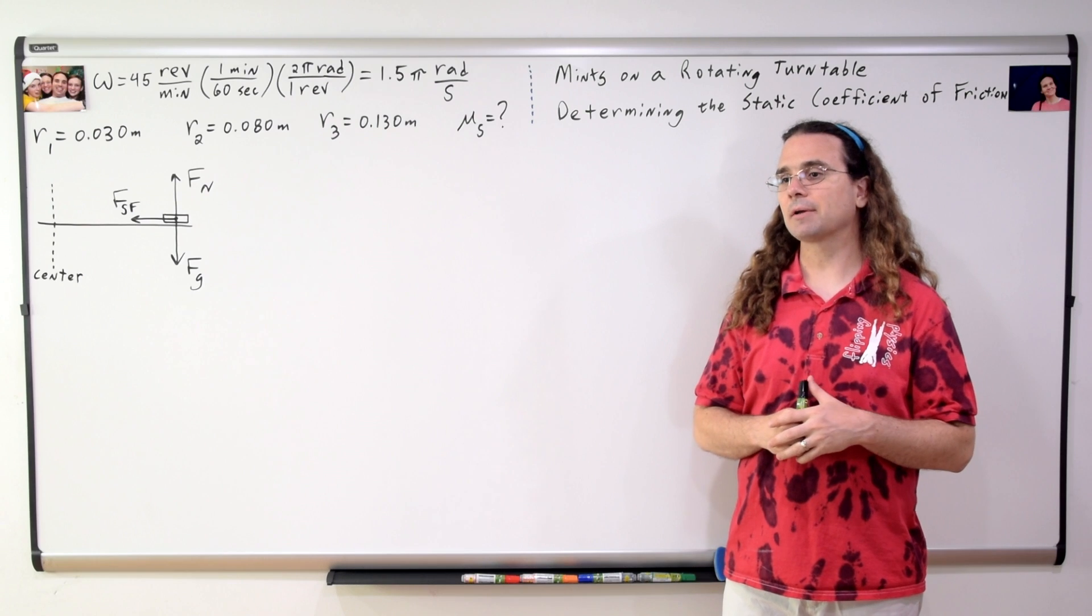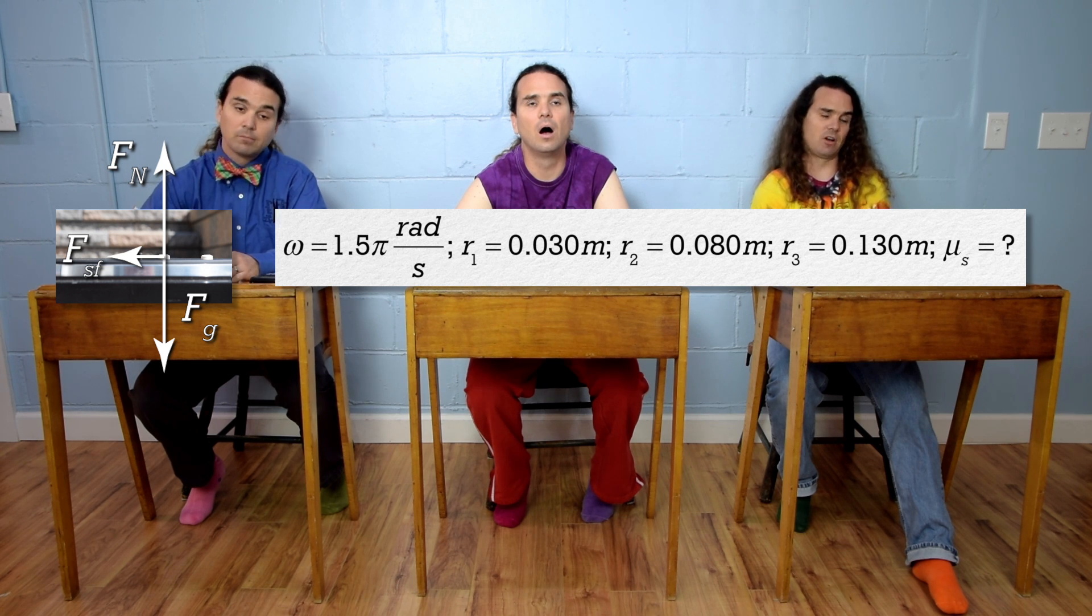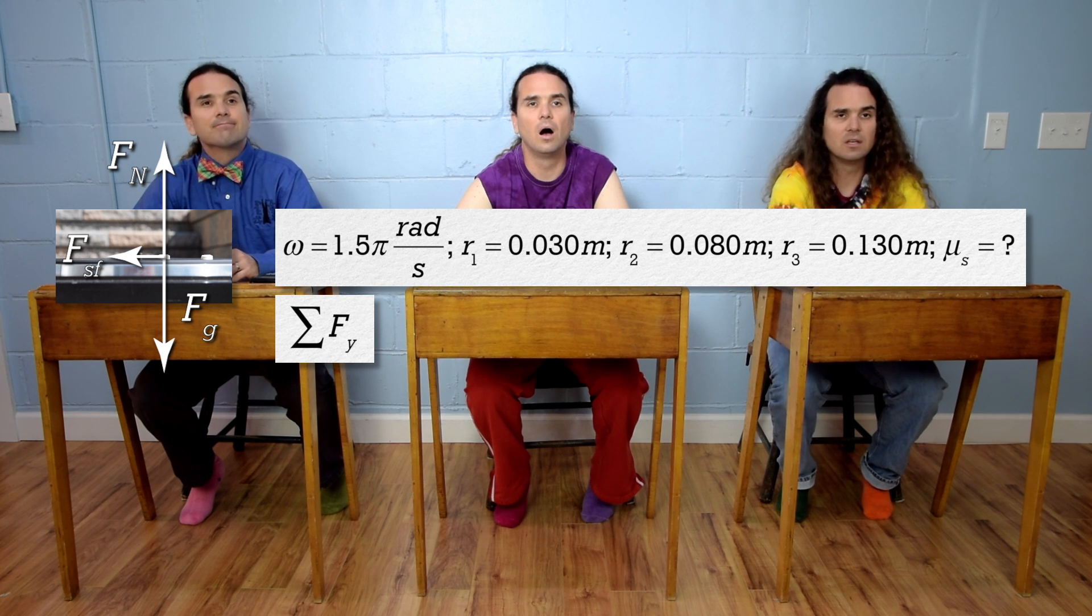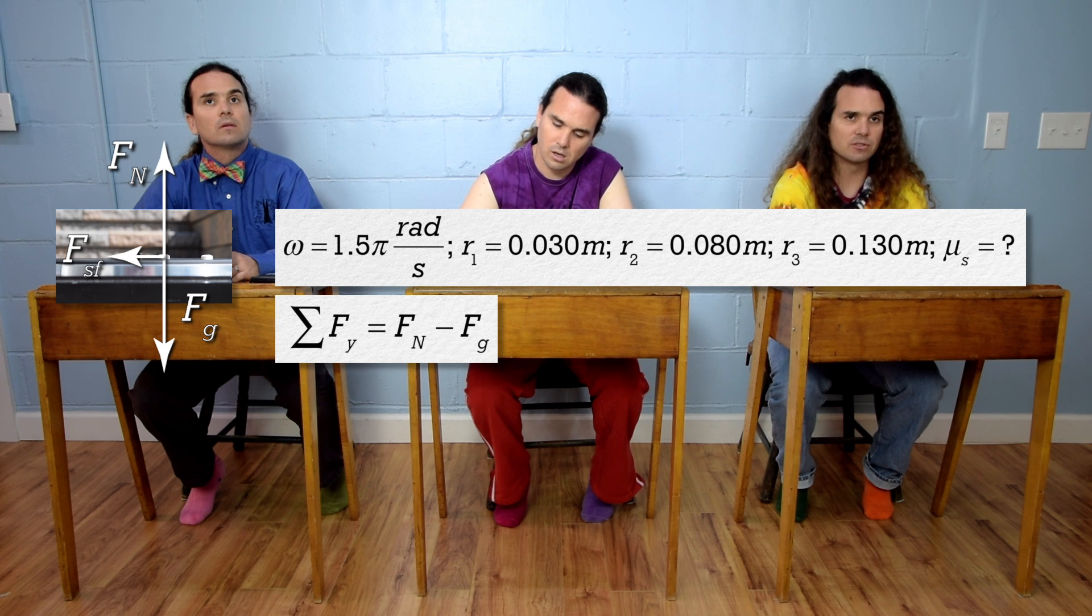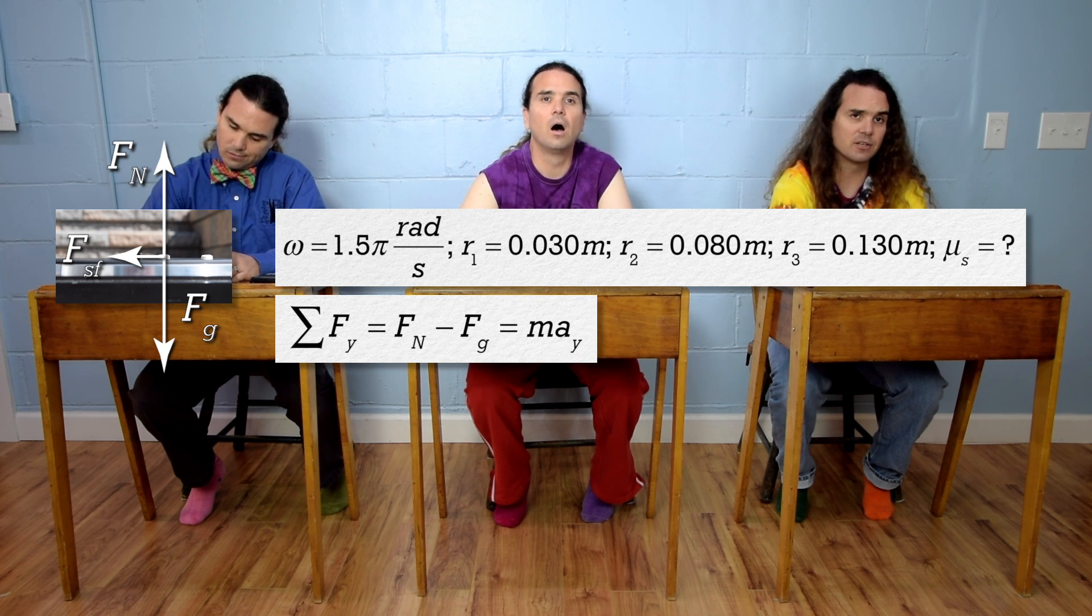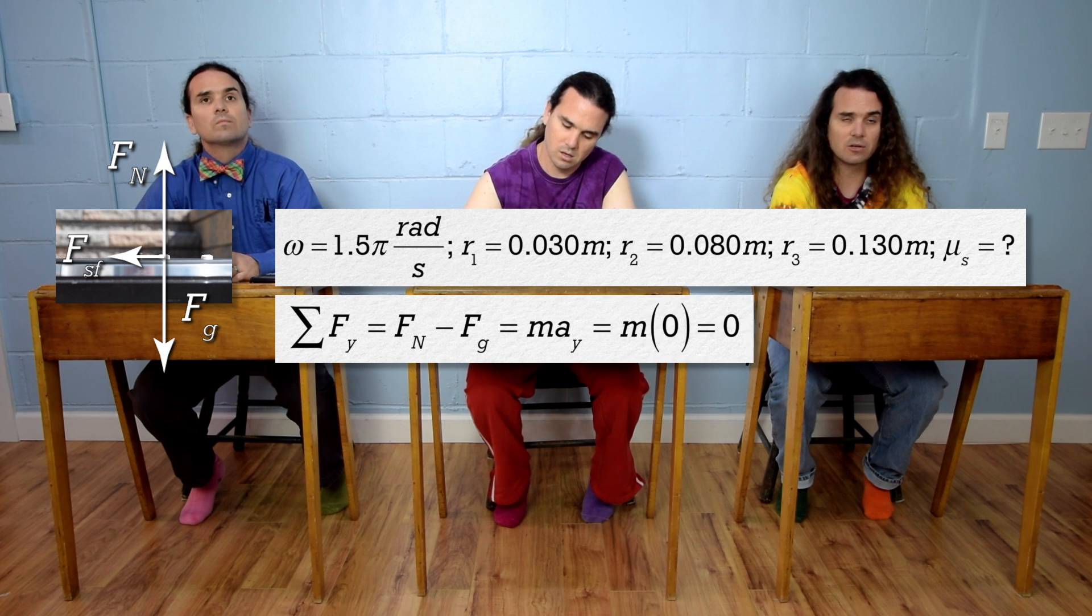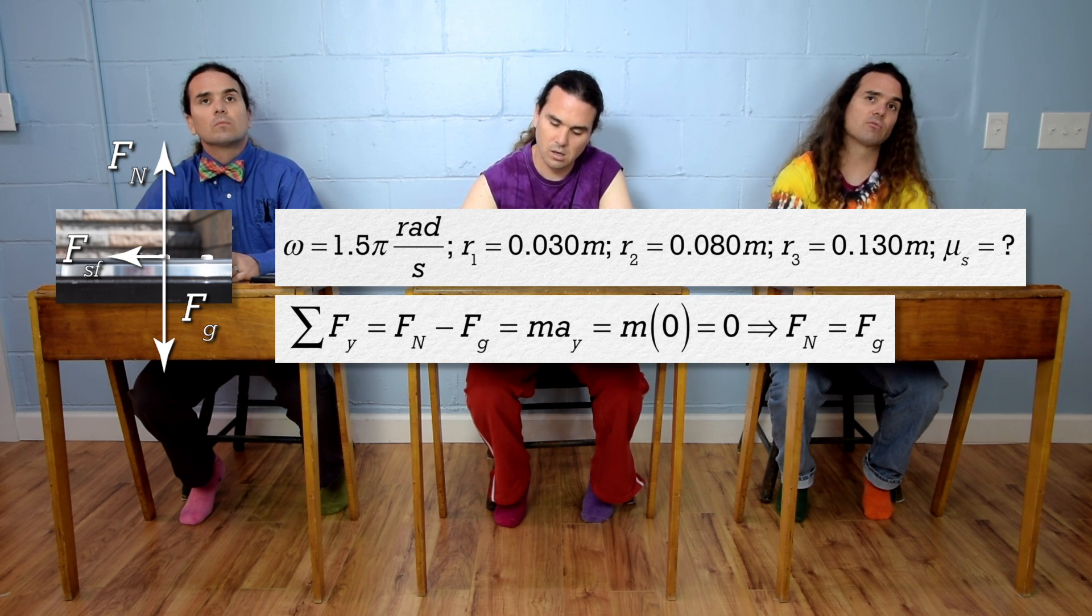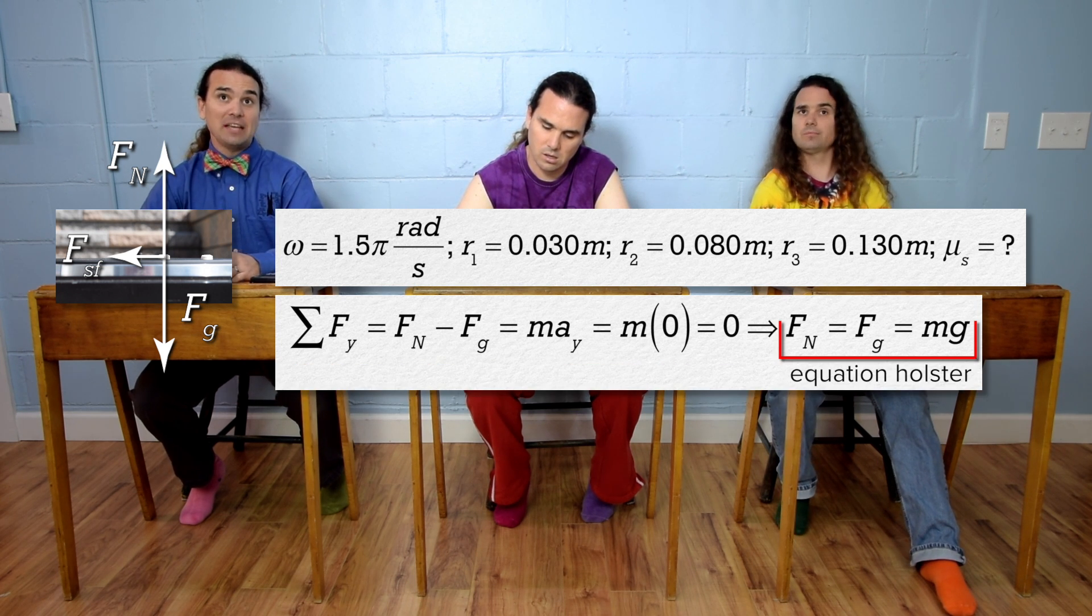Bo, please keep going. Now, we can sum the forces. Let's start with the net force in the y-direction equals force normal minus force of gravity, which equals mass times acceleration in the y-direction. The acceleration of the mints in the y-direction equals zero, so the force normal equals the force of gravity, or mass times acceleration due to gravity. We can put that in our equation holster.